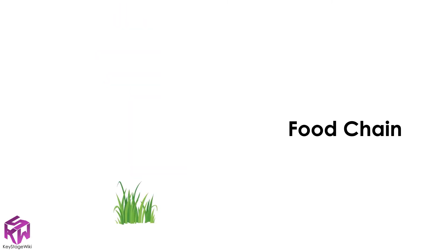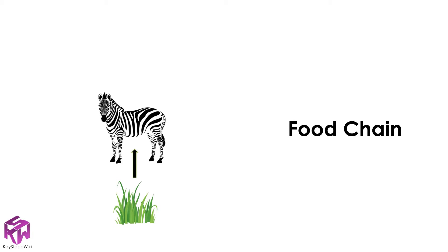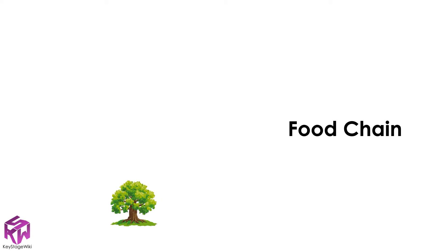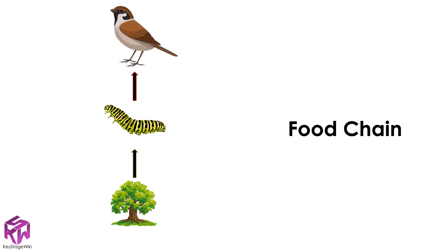Let's look at another example of a food chain. In this food chain, we can see that grass is eaten by zebra and that zebra are eaten by lions. In this example, the leaves of an oak tree are eaten by caterpillars, and the caterpillars are eaten by sparrows.